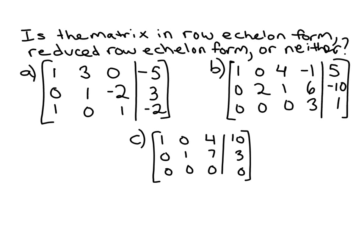To help with your understanding of row echelon form and reduced row echelon form, I wanted to look at three more example matrices and determine whether they're in either of those forms or neither.